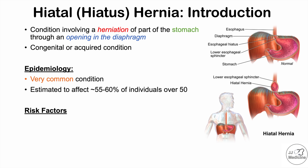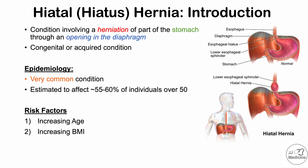Some of the risk factors for getting a hiatal hernia include the following. One is increasing age — as an individual ages, the muscles that surround this area begin to become weak and loose, allowing parts of the stomach to herniate through the esophageal hiatus. Another risk factor is increasing BMI or body mass index, so being obese, particularly with more abdominal fat, can put pressure on the stomach, pushing part of it up through the esophageal hiatus.